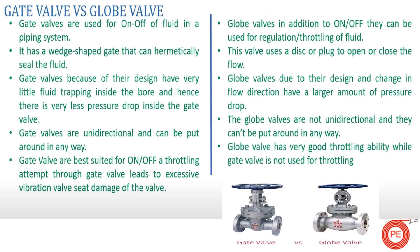Now let's discuss the basic differences between these two valves. Gate valves are on-off valves — whenever we ask which is the best valve for on-off service, it is your gate valve. While globe valves, in addition to on-off, are used for regulation or throttling of the fluid.